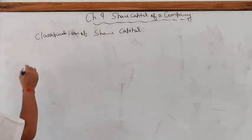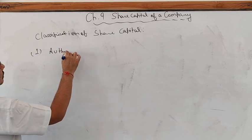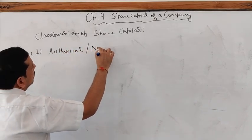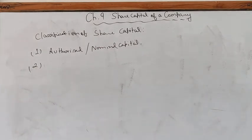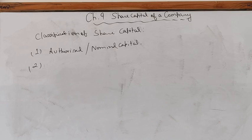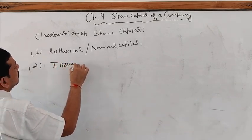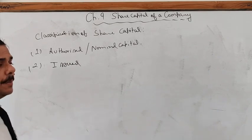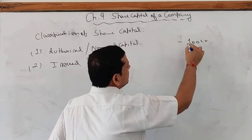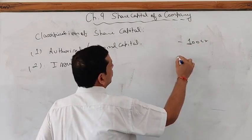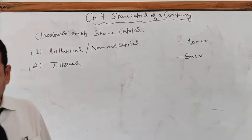Now the classification of share capital. First type is authorized capital, also called nominal capital or registered capital. This is the amount mentioned in the Memorandum of Association, or the maximum amount within which a company is registered with the Registrar of Companies. Out of the authorized capital, the amount issued to the public is called issued capital. For example, if a company is registered with 100 crores but issues only 50 crores initially, then issued capital is 50 crores.